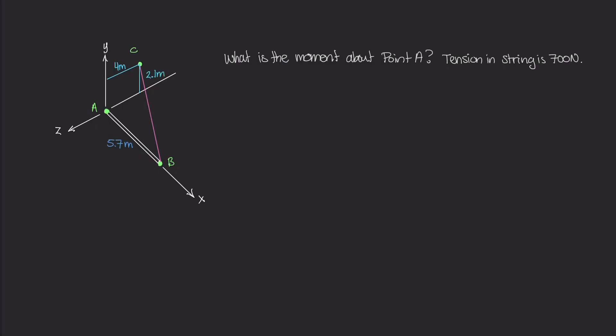Hey, welcome to our first three-dimensional moment example. Over here I have this diagram drawn and we have this metal pipe right here, this rigid metal pipe. It's attached at point A and at point B there is some sort of rope that goes all the way up to point C and there is tension in this rope.